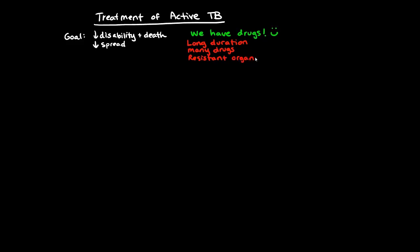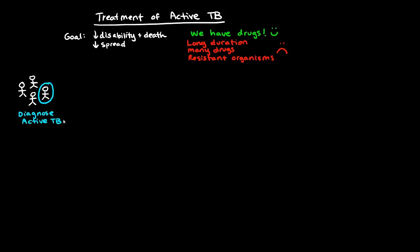We're going to talk about the treatment of resistant organisms on another video because it is quite complicated. For the purpose of this video, we're going to talk about the treatment of active TB — specifically the most common variety, which is pulmonary tuberculosis. We have to diagnose the infection first, so let's assume that we've done that. We know that this person has active TB in their lungs, and we want to initiate therapy.